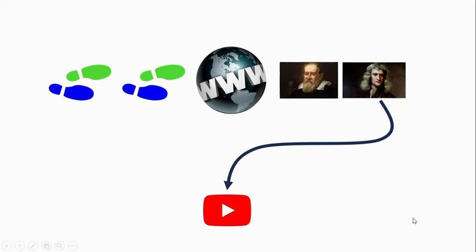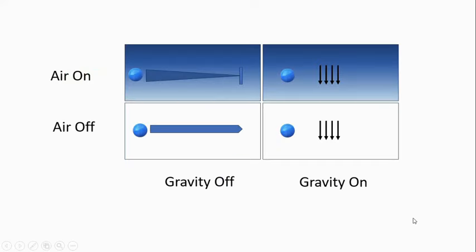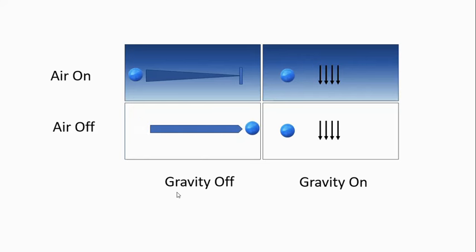Before we start, let us have a larger view at trajectories in a couple of possible environments. First, we have gravity-on and gravity-off situations — that is, there is gravity and there is no gravity. Then we have air-on and air-off situations — there is air and there is no air. In a situation when there is no gravity and no air, a projectile would travel in a straight path with constant velocity indefinitely.